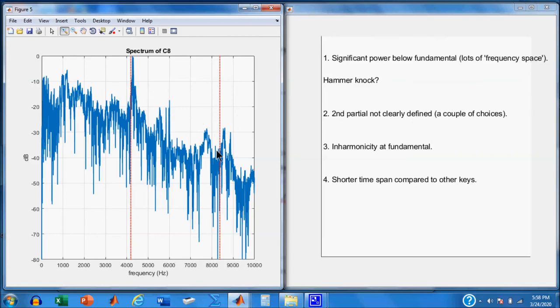The second thing you notice here is that the second partial, out here someplace, is not particularly well defined. It could be this curve, which is less than harmonic, or it could be this curve, or this peak, which is right on sharp with the harmonic. But it's 30 dB down, so it's not particularly well defined. So this is a much different key than the others.